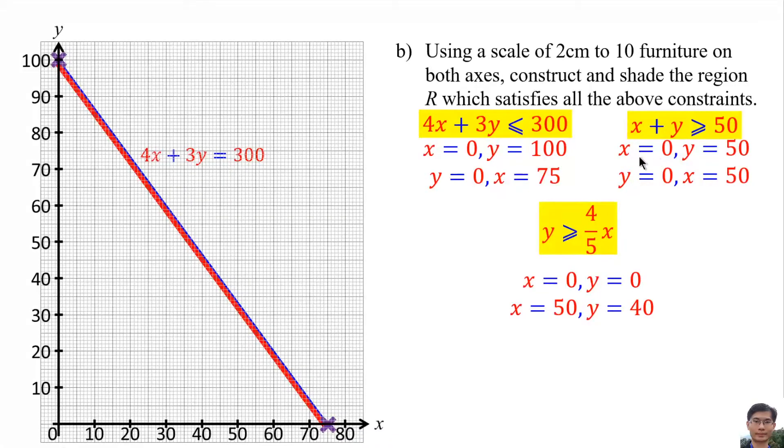Then we plot this point, x 0, y 50, and then y 0, x 50. Connect both points, and so this line is x plus y equals 50. More than or equal means above this line, so this part.